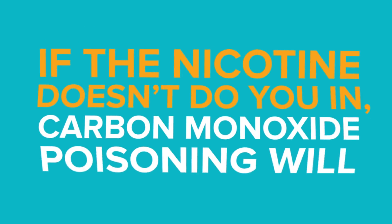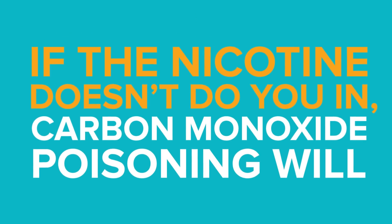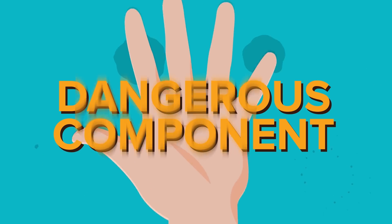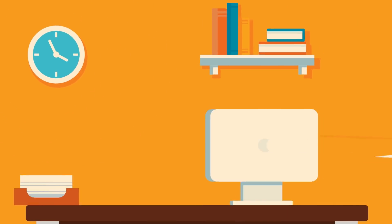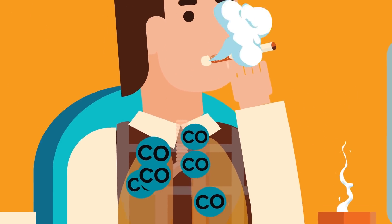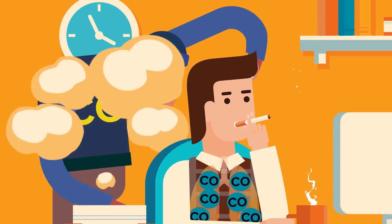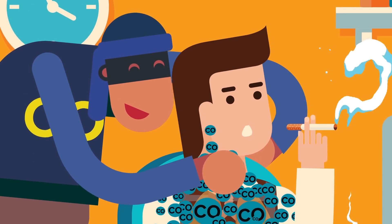Number 3. If the nicotine doesn't do you in, carbon monoxide poisoning will. A dangerous component of cigarette smoke is carbon monoxide, or CO. It is an odorless, colorless gas that can take the place of oxygen in red blood cells. If the red blood cells carry more CO instead of oxygen throughout the body, oxygen deprivation occurs.